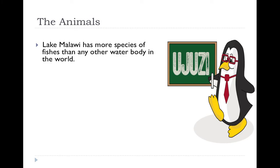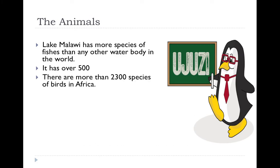Lake Malawi has over 500 different species of fish, making it the most likely place in the world to find a new species of fish. There are also more than 2,300 species of birds in Africa, making it an interesting place for bird watching.